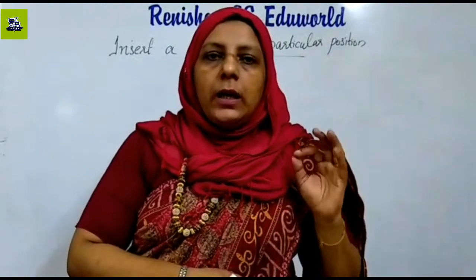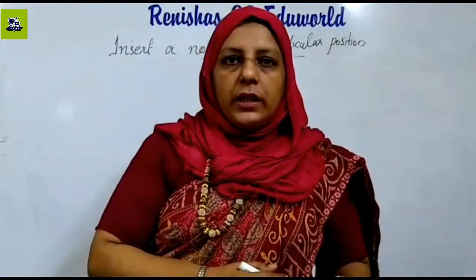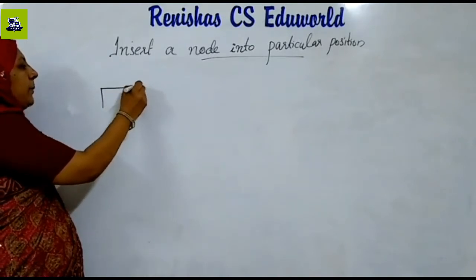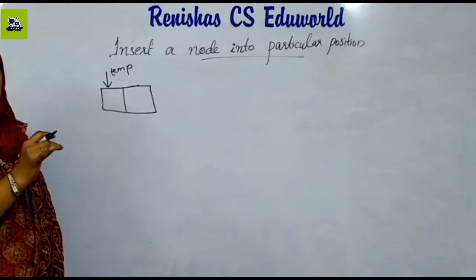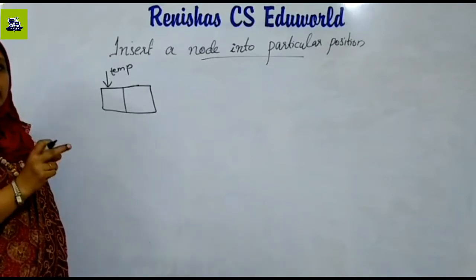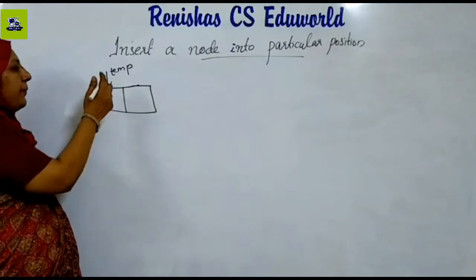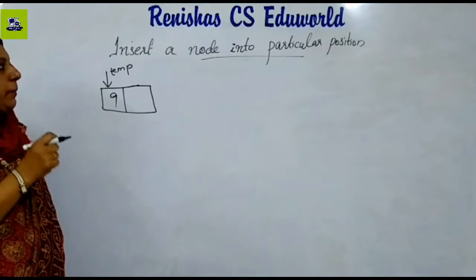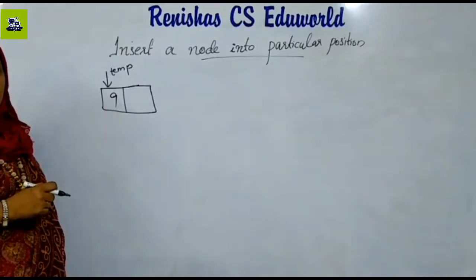We will explain how to insert a node at a particular position. First, we will allocate memory for the new node, then insert the data field and link it at the desired position.